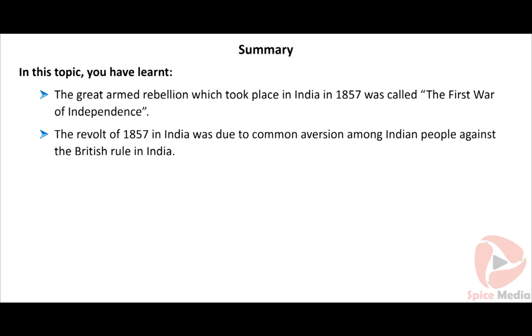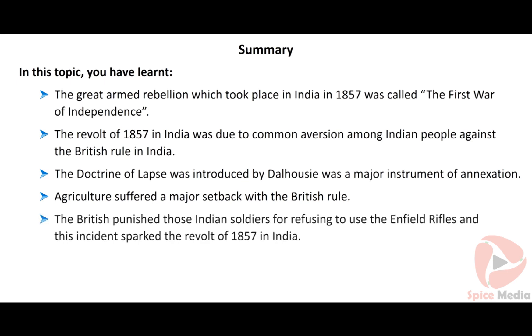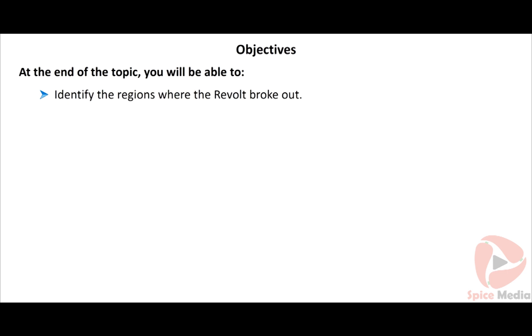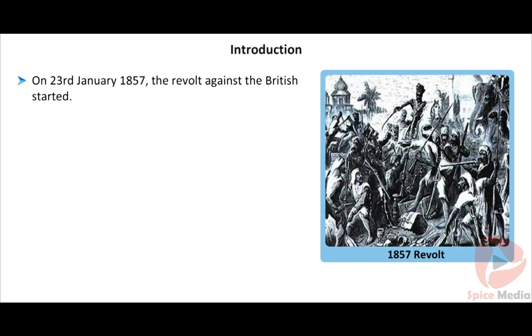In summary: the great armed rebellion which took place in India in 1857 was called the First War of Independence. The revolt was due to a common aversion among Indian people against British rule. The Doctrine of Lapse, introduced by Dalhousie, was a major instrument of annexation. Agriculture suffered a major setback under British rule. The British punished Indian soldiers for refusing to use the Enfield rifles, which ultimately sparked the revolt of 1857.